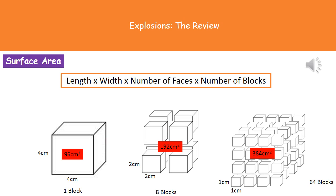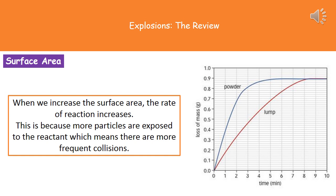When talking about the difference between a lump of a substance and a powder, we're looking at the difference in surface area. In terms of rates of reaction, if we increase the surface area we increase the rate of reaction. The reason is that more particles are exposed to the other reactant, meaning we have more frequent collisions — remember the importance of using that phrase, more frequent collisions.